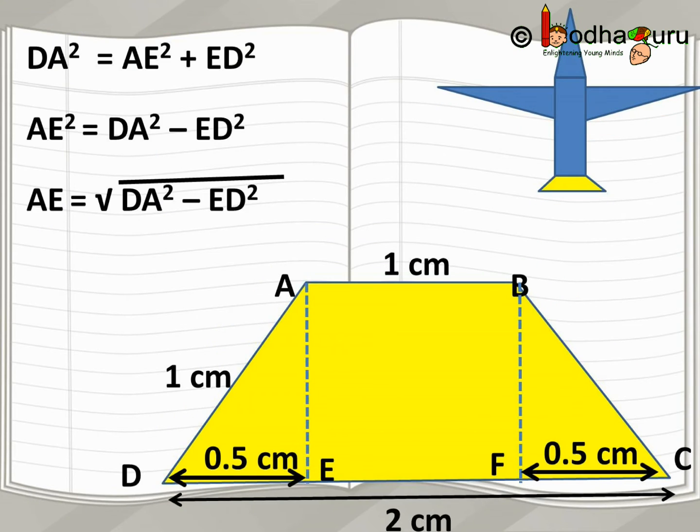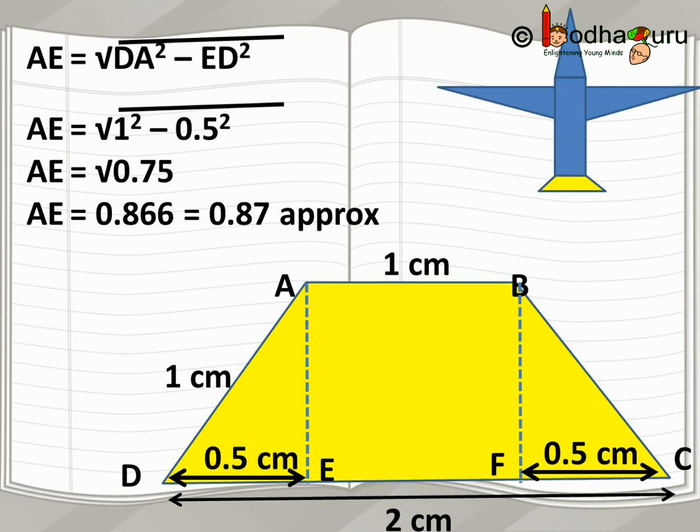ADE is a right triangle. So, using Pythagoras theorem, we get AD square is equal to AE square plus ED square. So, we get AE square is equal to DA square minus ED square. So, AE is equal to square root of 1 square minus 0.5 square. This is equal to square root of 1 minus 0.25. That is, it is equal to square root of 0.75.